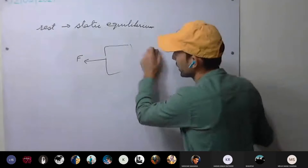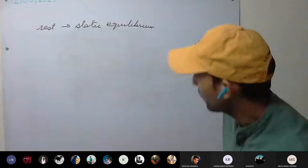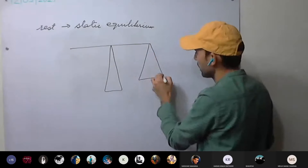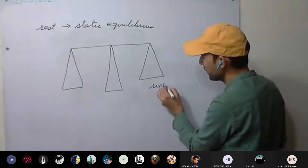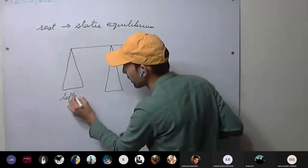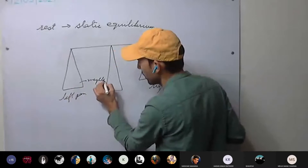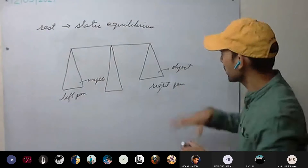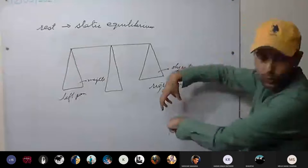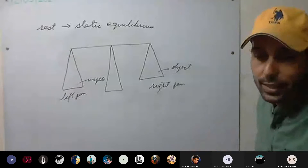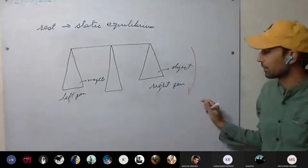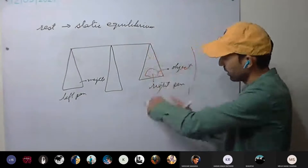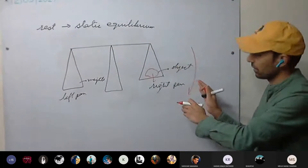Now we take an example of rotational motion. We take one beam balance. This is the right pan, left pan. Here I'll be putting weights, and here the object. On the right pan we have put the object; on the left pan we have put the weights. The object — which force is being exerted? Downward. It wants to go downward. So there is a moment of force — clockwise.